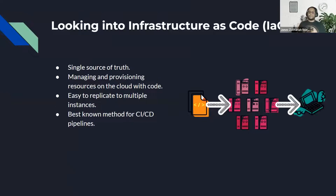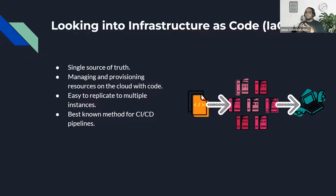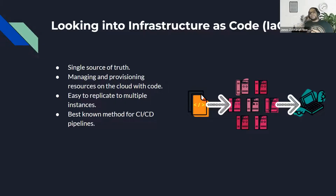Looking at infrastructure as code, the first thing that comes to mind is it's a single source of truth. Whenever you want to deploy applications to the cloud, it's best to do it with infrastructure as code because it is one place managing and provisioning your AWS resources with just a snippet of code. This code could be JSON or YAML files, and with AWS CDK it could be in a language you prefer — JavaScript or Python — where your complete infrastructure sits as code itself.